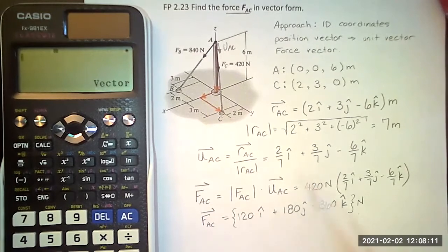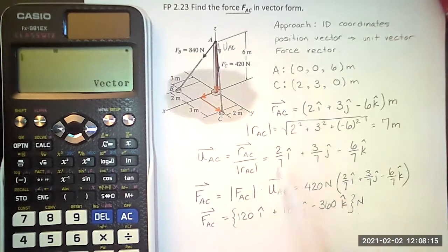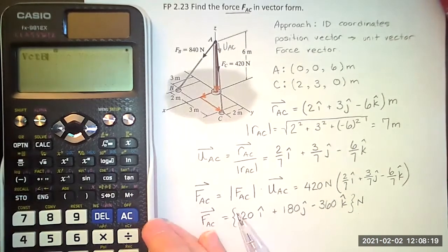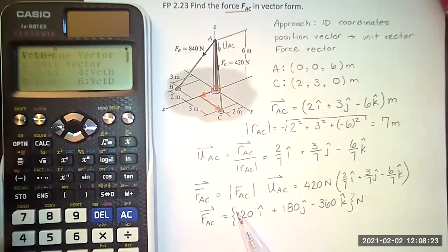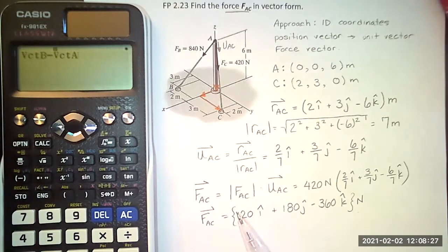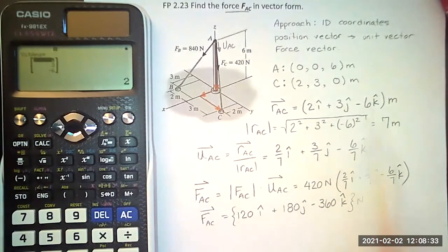So the position vector from A to C is equal to the coordinates of C minus the coordinates of A. So I set the coordinate of C to equal vector B minus vector A, where I put my coordinates of A. And I get my position vector to be 2, 3, minus 6.